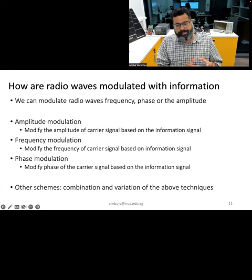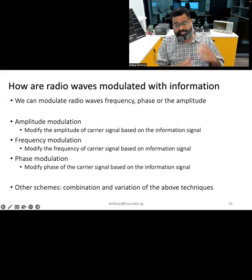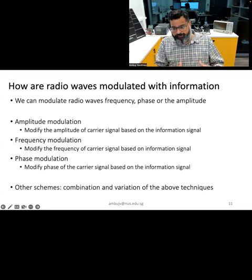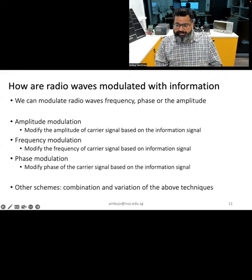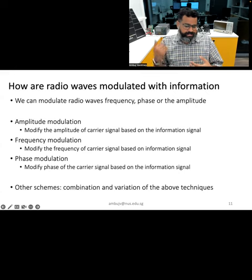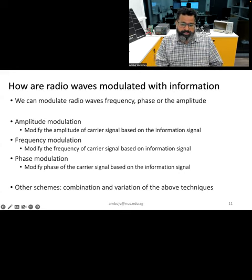In addition to these basic techniques, there are also more complex modulation methods that use a combination of them. These include quadrature amplitude modulation and orthogonal frequency division multiplexing, which is widely used in Wi-Fi radios. We will only briefly touch on the advanced modulation techniques here, as these can be covered in more advanced courses in this area.